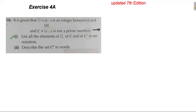Exercise 4a, question number 10: U is equal to x such that x is an integer between 0 and 10. C equals x is not a prime number. List all the elements of U, C, and C' in set notation. Here we form the universal set — integers between 0 and 10, where 0 and 10 are not included.